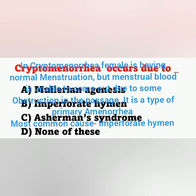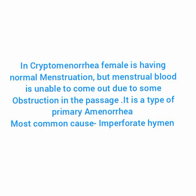What is Cryptomenorrhea? In Cryptomenorrhea, the female is having normal menstruation, but the menstrual blood is unable to come out. It is not coming outside due to some obstruction in the passage. The patient experiences cyclic abdominal pain, regular abdominal pain like menstruation, but no menstrual blood comes out. It is one type of primary amenorrhea, and the most common cause is Imperforate Hymen.